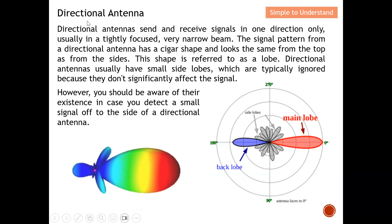A directional antenna focuses the signal in a particular direction — it sends and receives signals in one direction only. It is used in a tightly focused, very narrow beam. The signal pattern from a directional antenna has a cigar shape, and it looks the same from the top as from the side. This shape is referred to as a lobe.